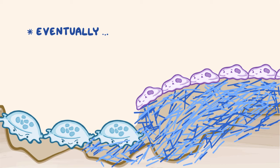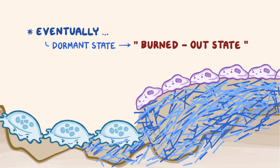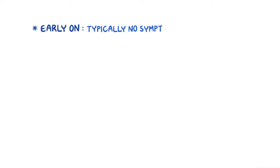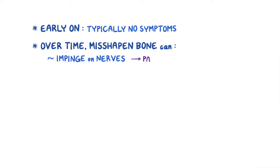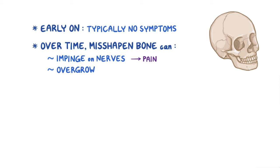Eventually, the osteoblastic activity also slows down, and there's a dormant state in the disease, called the burned-out state. Early on, Paget's disease of bone doesn't typically cause symptoms, but over time, the misshapen bones can impinge on nerves and cause pain. In addition, if the skull is involved, the overgrowth of bones can make a person have a lion-like face, which is called leontiasis.